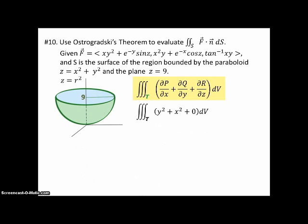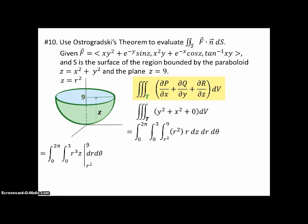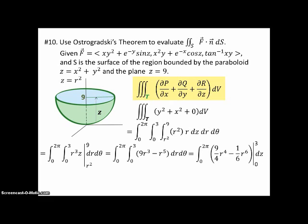Just to show another option, we could let Z be the first variable integrated with respect to. Z goes from the bottom of the bowl up to 9, i.e., from R² up to 9. We integrate with respect to Z first, getting R³Z evaluated from R² to 9, which comes out to 9R³ − R⁵. Integrating with respect to R, we get (9/4)R⁴ − (1/6)R⁶ evaluated from 0 to 3, because R goes from the center out to the edge of the paraboloid. Then we evaluate and integrate with respect to theta, getting the same final answer as before.